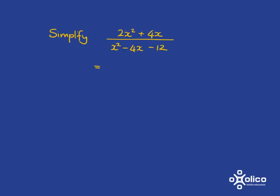If I'm asked to simplify 2x squared plus 4x over x squared minus 4x minus 12, I'm again going to use factorization. I need to look at factorizing the top and factorizing the bottom. First, always look for a common factor. I can see at the top there's a common factor of 2x, which will leave me with an x plus 2.